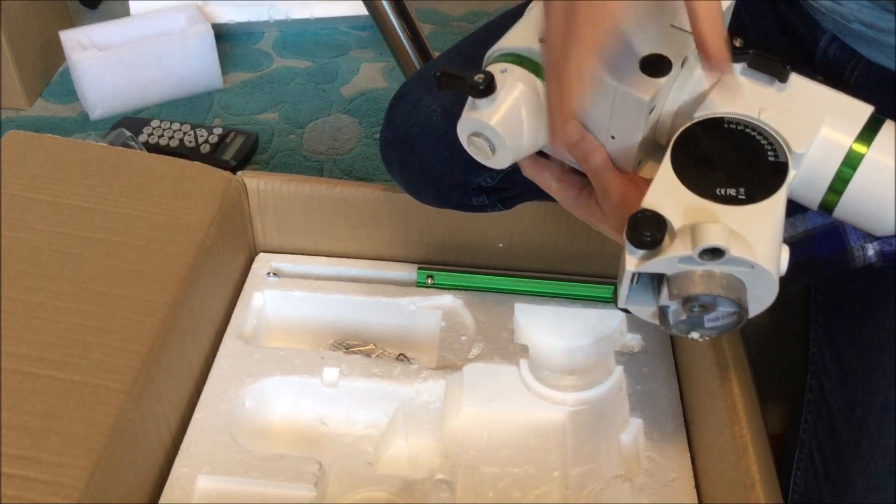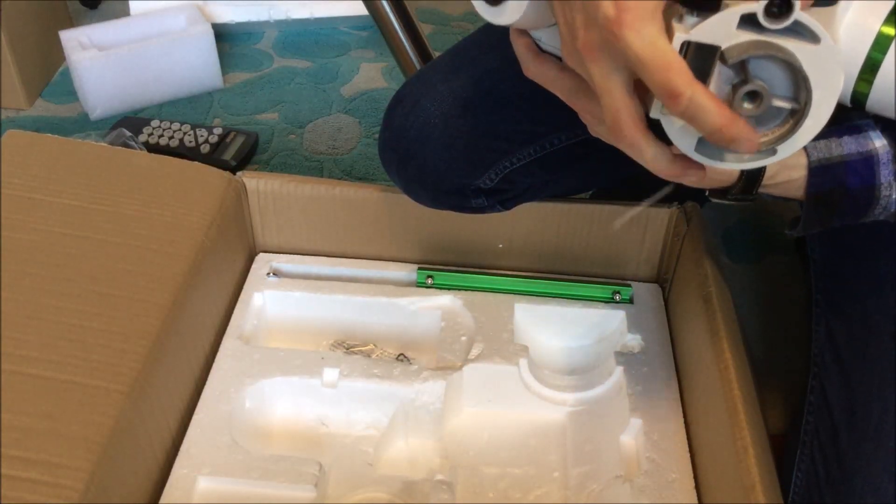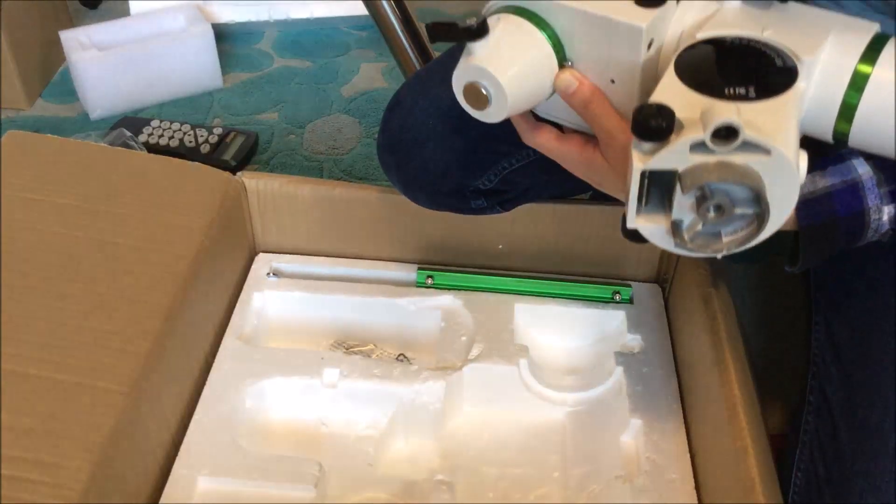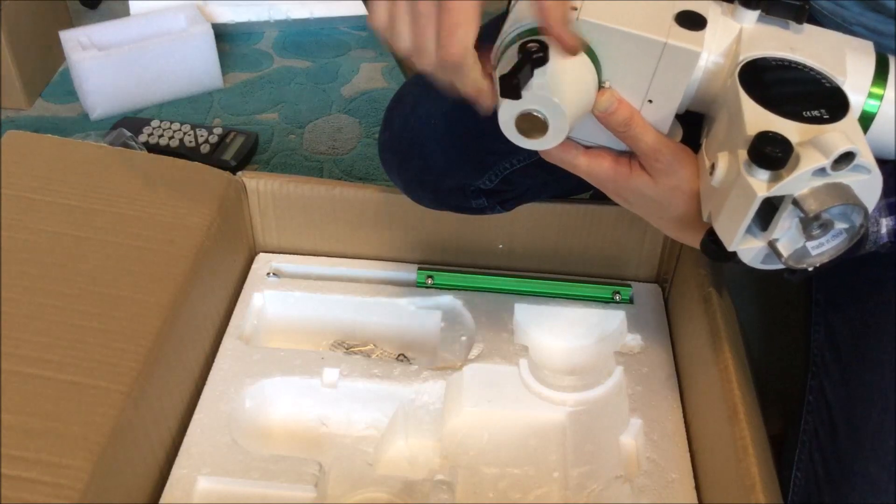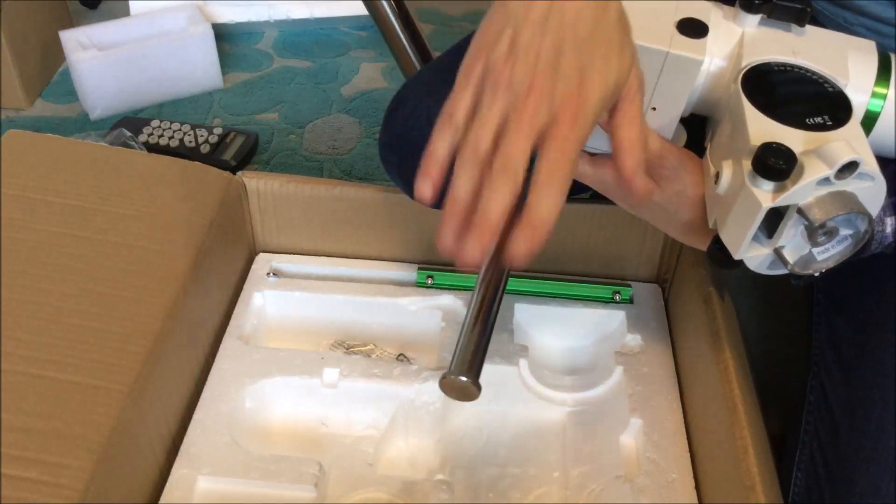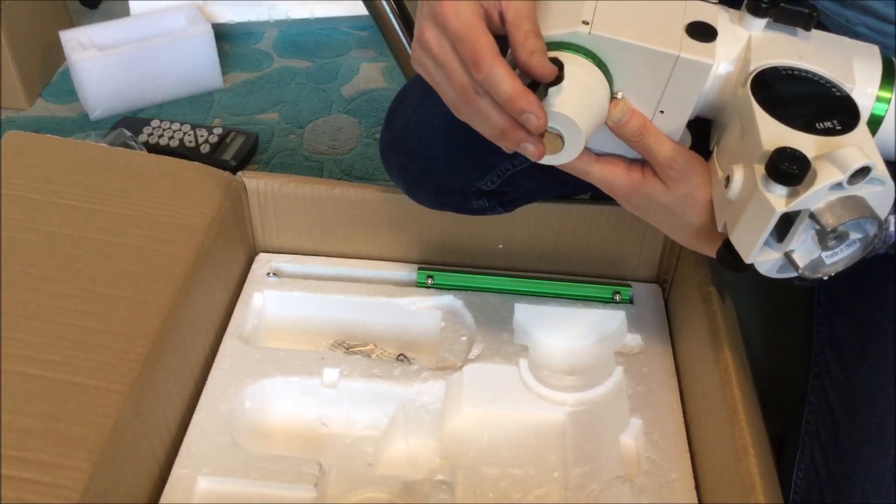So just having a quick look, you can see this is where we're going to attach the mount head to the tripod. Here, if I release this clamp, we can see that the counterweight is going to attach here on this counterweight bar that ships in a nicely retracted position.